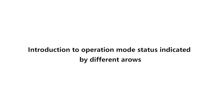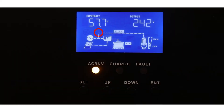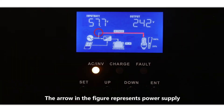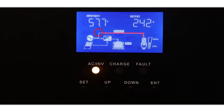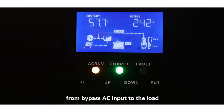Introduction to operation mode status indicated by different arrows. The arrow in the figure represents power supply from bypass AC input to the load.